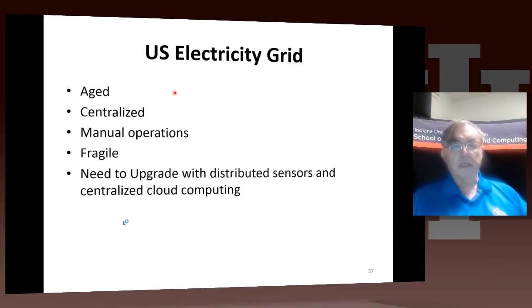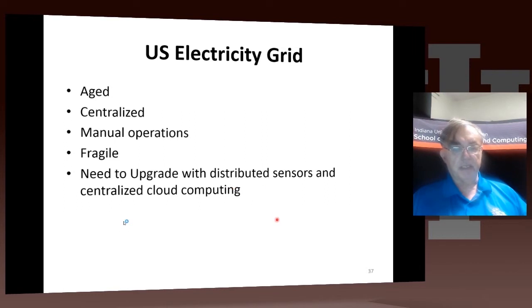The US electricity grid is aged, centralized, and very fragile. It needs to be upgraded with distributed sensors and centralized cloud computing.